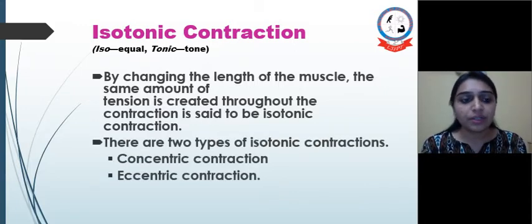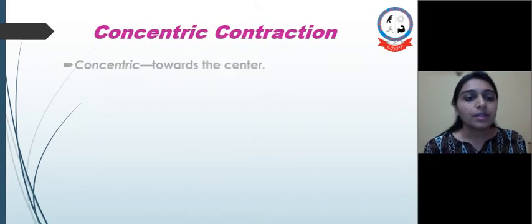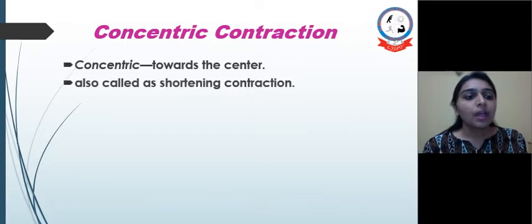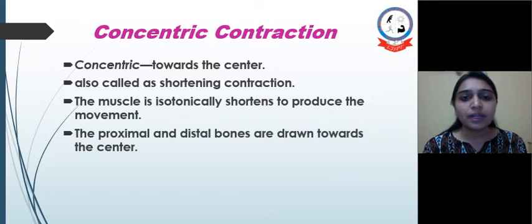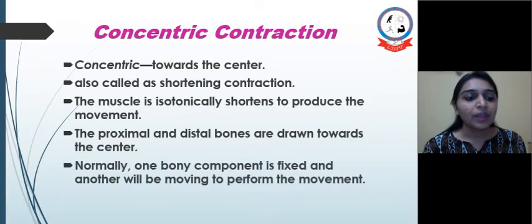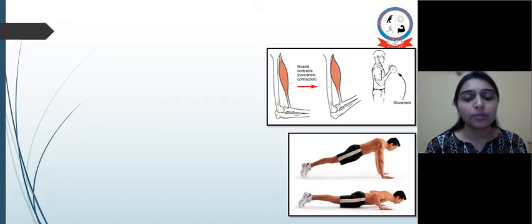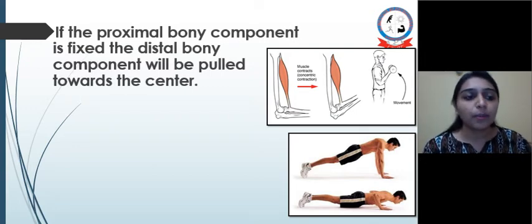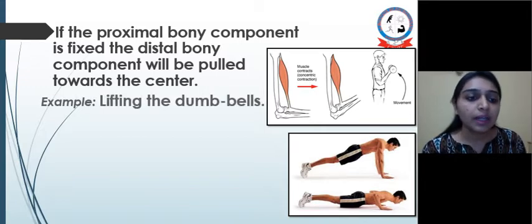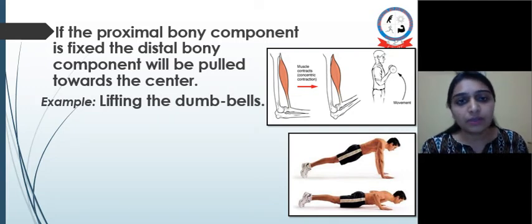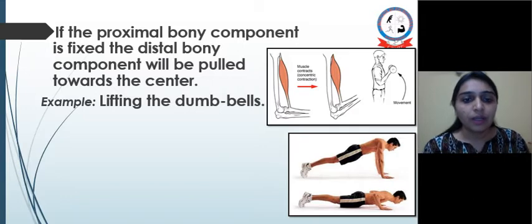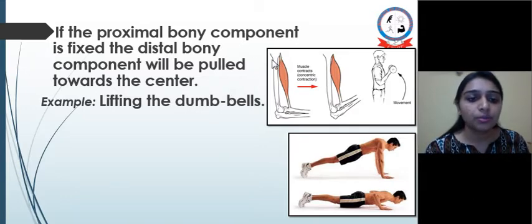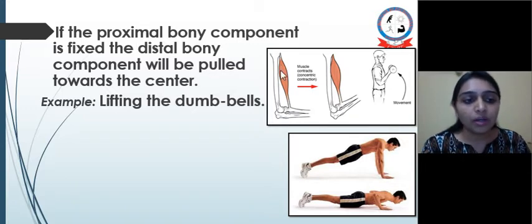There are two types of isotonic contraction: concentric contraction and eccentric contraction. Concentric means towards the center; it is also known as shortening contraction. The muscle is isotonically shortened to produce movement. The proximal and distal bones are drawn towards the center. Normally one bony component is fixed and another moves. For example, when lifting dumbbells, the proximal component — the humerus — is fixed, and the distal component, the forearm, has its insertion coming towards the origin.